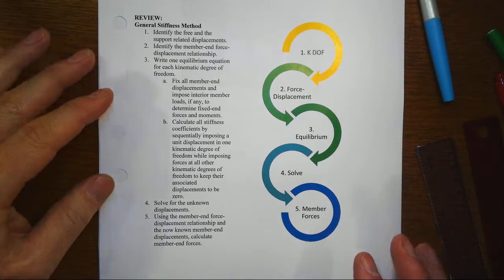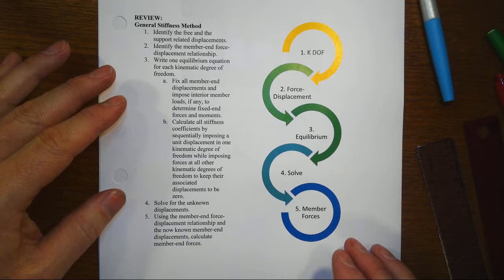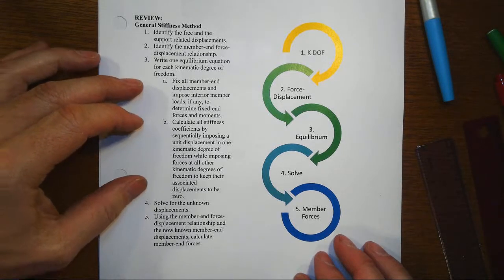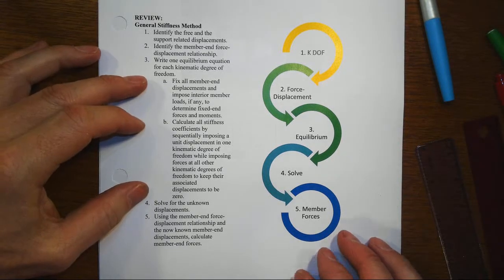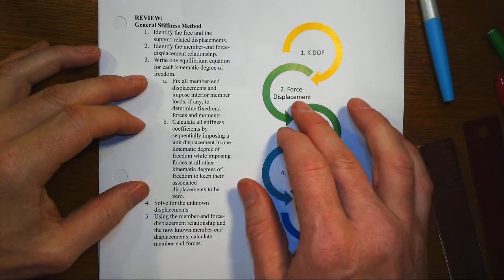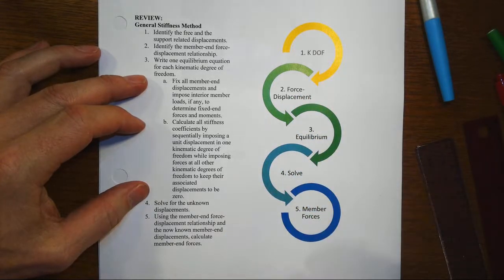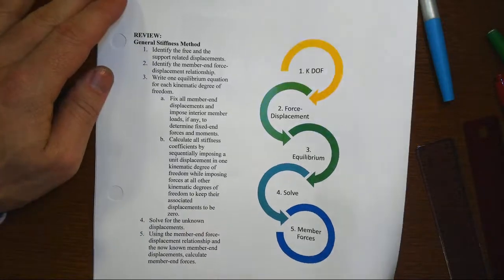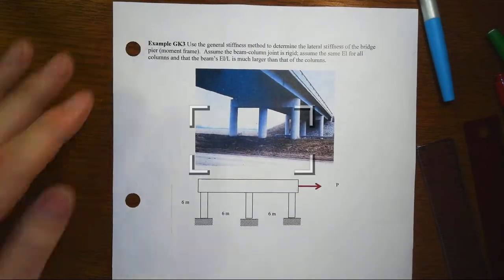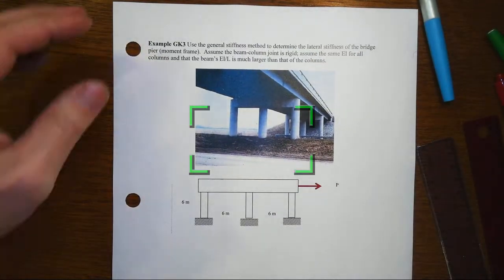Now the thing that makes it the generalized stiffness approach is really about how we're going to assemble and put things in from the force-displacement equation into the equilibrium equation. So that's what we're going to begin to illustrate here in this bridge pier scenario.